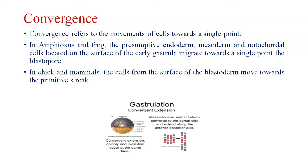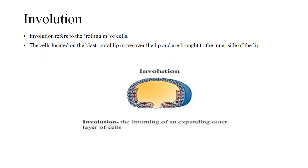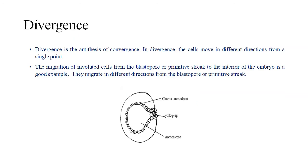In chick and mammals, the cells from the surface of the blastoderm move towards the primitive streak. Next is involution. It refers to the rolling in of cells. The cells located on the blastopore lip move towards the lip and are brought to the inner side of the lip.